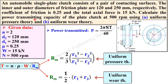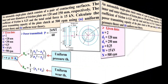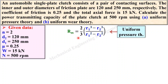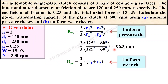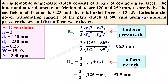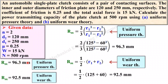We are going to find the power transmitting capacity using both theories. First, we find r_m using both theories. For uniform pressure theory, put the value: (2/3) × (r1³ - r2³)/(r1² - r2²), where r1 = d1/2 and r2 = d2/2. Simplifying gives r_m = 96.3 mm. For uniform wear theory, putting in r1 and r2 and simplifying gives r_m = 92.5 mm.